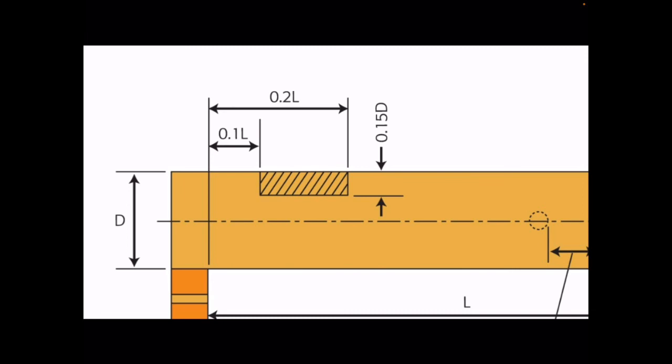Let's have a closer look at what's going on. You need to refer to both the length and the depth — so we have a length of 2300 and a depth of 600 in this example. You are not allowed to start your notch any closer than 0.1 of the length, and you're not allowed to end it any further away than 0.2 of the length. So your notch runs from a minimum of 0.1L at the inside edge to a maximum of 0.2L at the outside. We'll work through the figures in a moment.